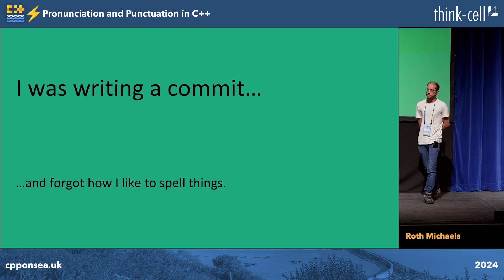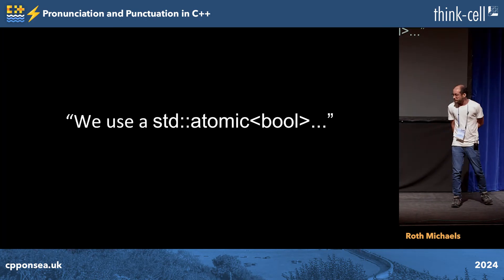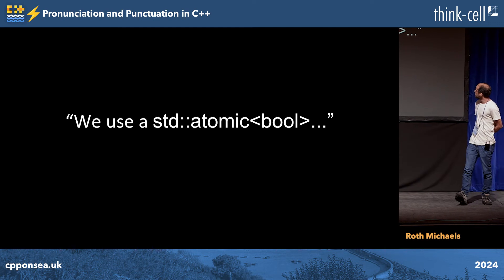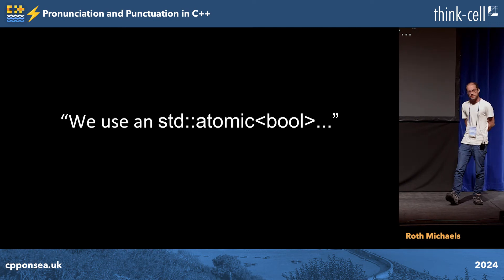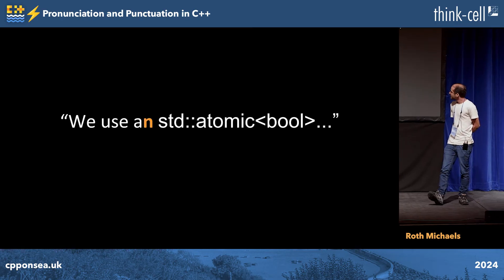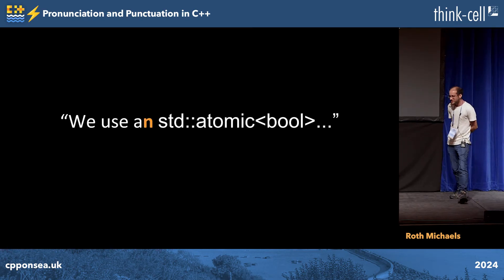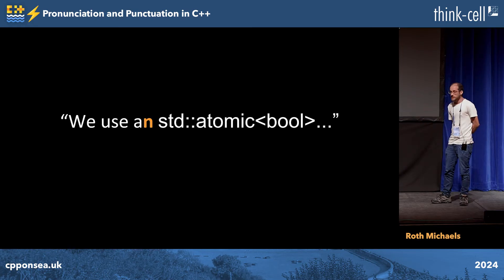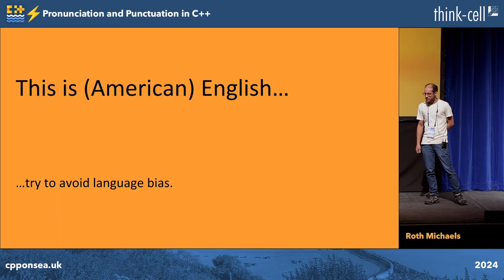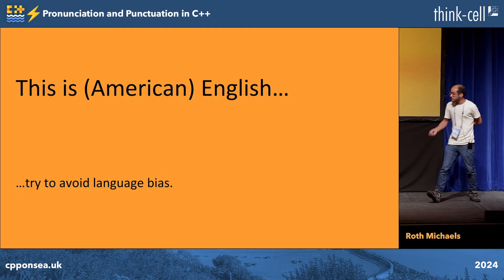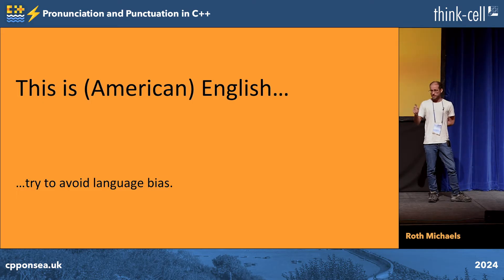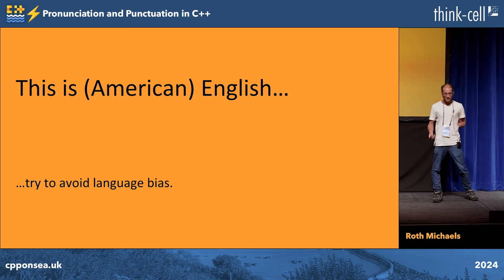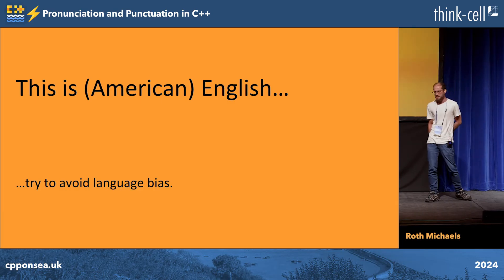This talk is mostly about — I was writing a commit recently and I forgot how I like to spell things. Do I spell it like this, or do I spell it like this? The 'an' here. If you're not a native English speaker, the rule is that if you're preceding a vowel sound — not a vowel — you need to use 'an', not 'a' before it. I'm talking about American English; I have no idea if that's the rule in Britain. It's Independence Day in the US and I'm an American from Boston, Massachusetts, where we invented America.